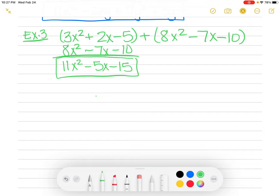So this is going to give me 11x squared minus 5x minus 15. And that's my answer for example 3. So see, this is pretty easy, not too difficult here. So let's do example 4.